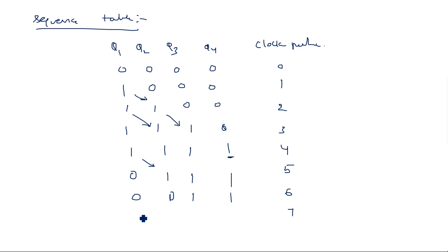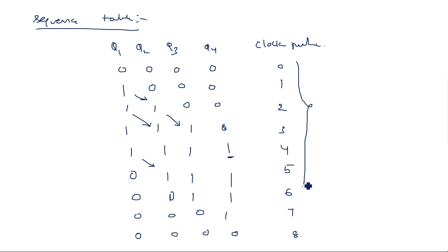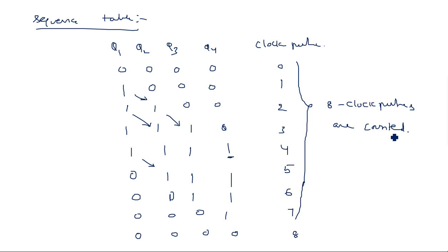After four ones, the sequence continues: 0, 1, 1, 1 then 0, 0, 1, 1 then 0, 0, 0, 1, and on the 8th clock pulse it returns to all zeros: 0, 0, 0, 0. So it takes 8 clock pulses to return to the same state. A 4-bit Johnson counter counts 8 clock pulses, whereas a 4-bit ring counter can count only 4 clock pulses. That is the difference between ring counter and Johnson counter.